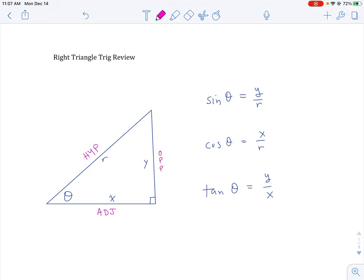So sine all year we've been calling it y over r, but in geometry you just called it opposite over hypotenuse. And cosine was adjacent over hypotenuse. And again, if you took geometry this should sound familiar, or physics.